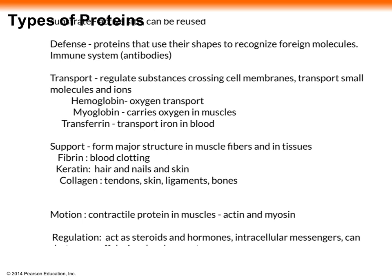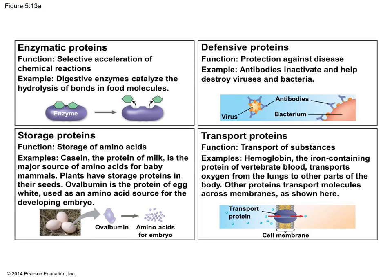Storage proteins store things like calcium and iron ions by binding to them. Summary charts in your book lay out each type of protein, its function, and examples—including enzymes, storage proteins, and defensive proteins—with pictures of what they look like. These charts also cover hormonal proteins like insulin, contractile and motor proteins, receptor proteins, and structural proteins, providing a concise overview of all the protein types discussed.